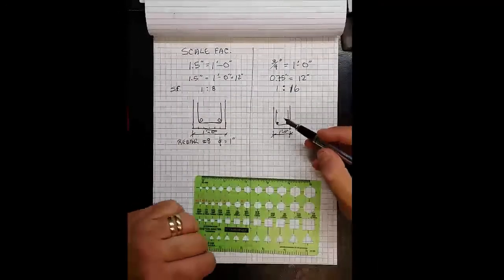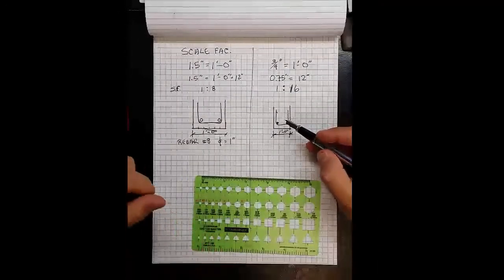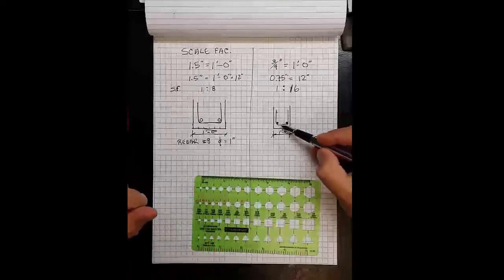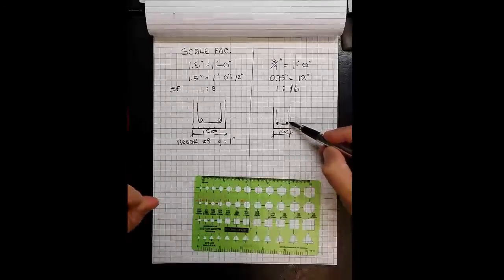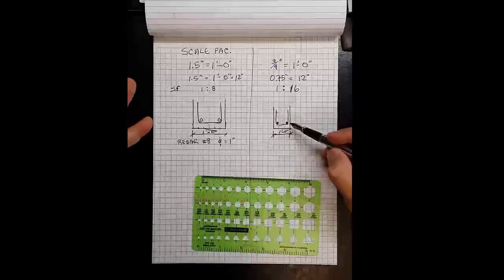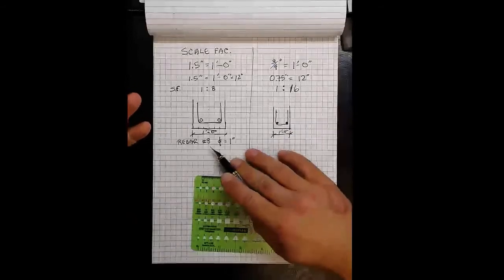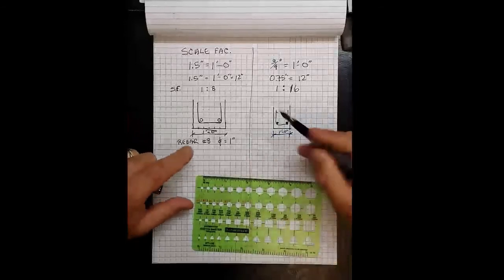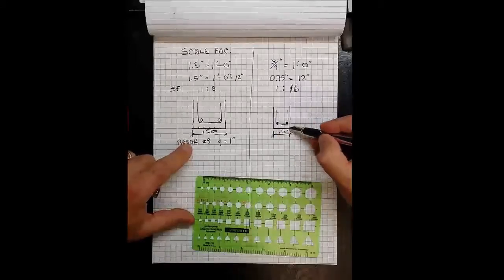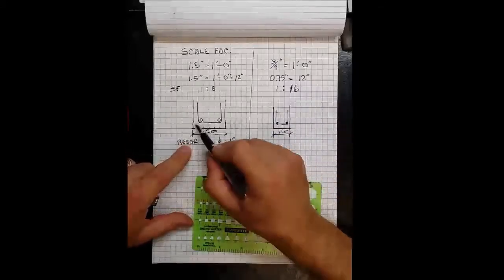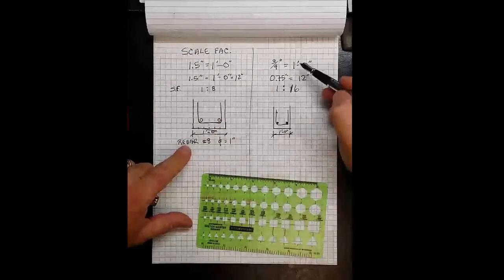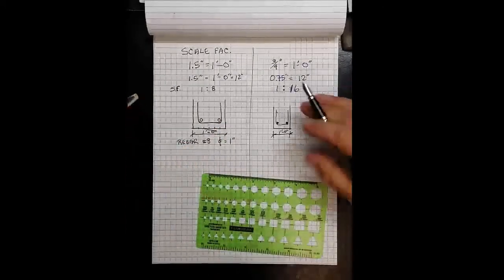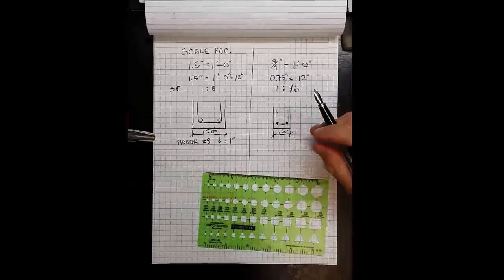Again, we're not suggesting that these are real structural engineering solutions. These are just graphical examples of the reinforcing configuration. And we selected a number eight simply because it was one inch diameter for these examples. But you see one foot wide with two number eights in the bottom, one foot wide with two number eights at the two different scales.